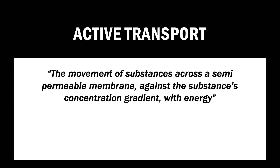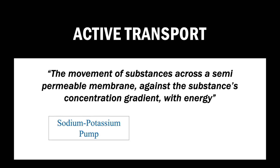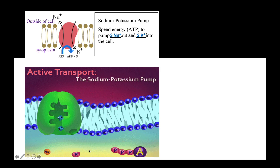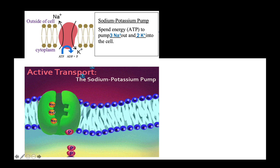Now let's take a look at active transport. Active transport is the movement of substances across a semi-permeable membrane against the substance's concentration gradient with energy. There are two types of active transport: the sodium-potassium pump and bulk transport. In some cells, such as neurons, they will spend energy in the form of ATP to activate the sodium-potassium pump and pump three sodium ions out and two potassium ions into the cell.